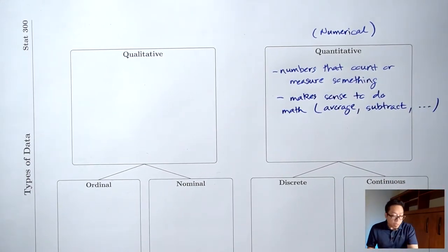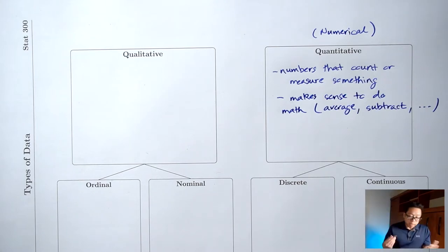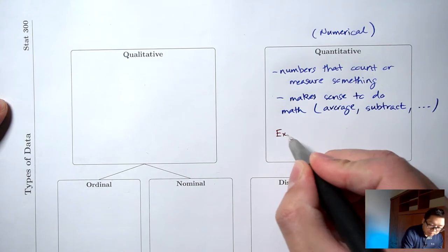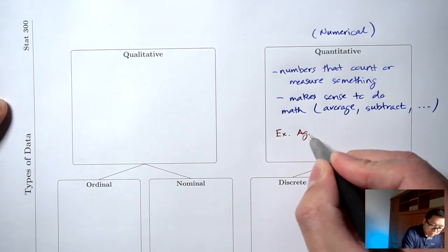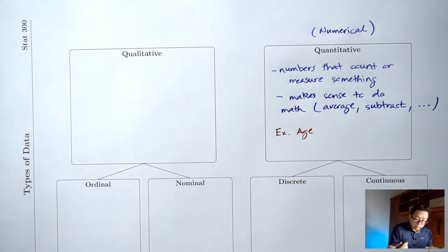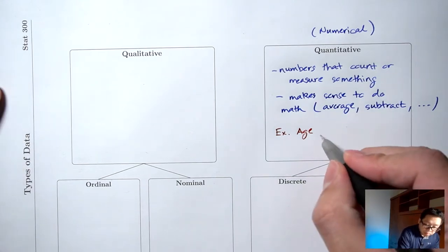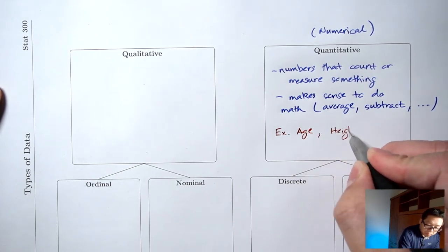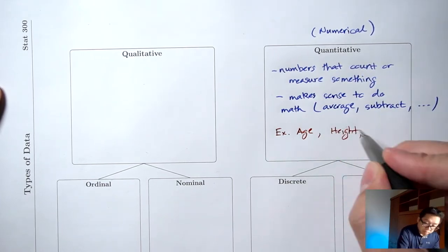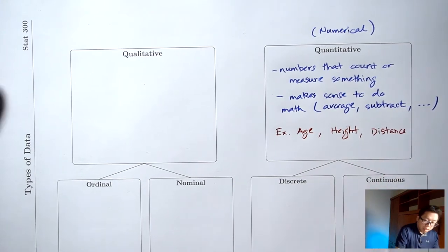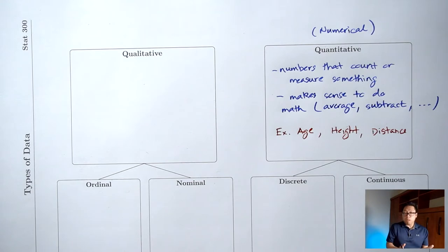I mentioned one example already. An example of quantitative data would be age. Age is a number and it measures how long you've been alive — how many years you've been alive. Other examples of quantitative data: height, distance. These are all numbers that count or measure something.